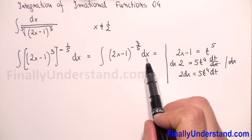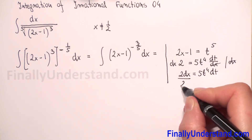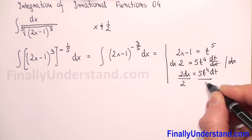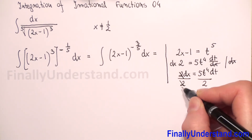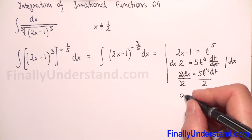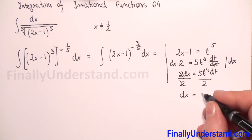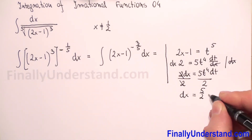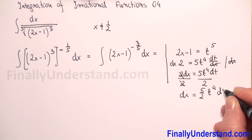Now I will multiply both sides by dx to eliminate the denominator, giving 2 dx equals 5t to the 4th power dt. Because we have only dx, I will divide both sides by 2. The 2s cancel, and we get dx equals 5 over 2 times t to the 4th power dt.